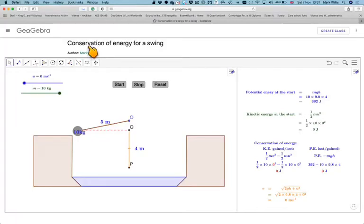All right, in this video we're going to look at the conservation of energy for a swing. So basically what we've got here is a fixed point that the ball is attached to. It's going to be released from here.